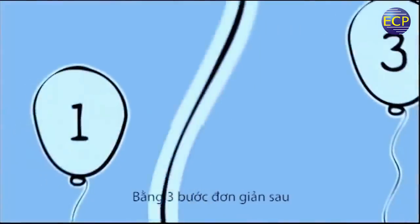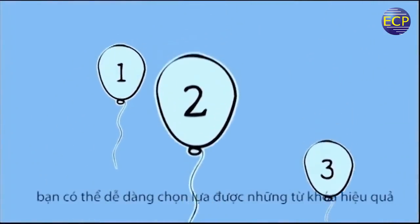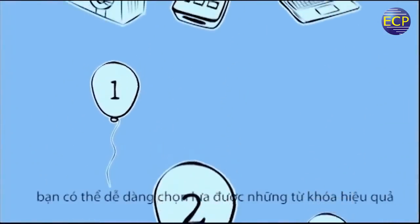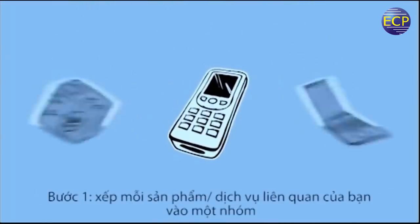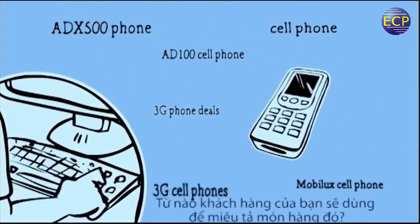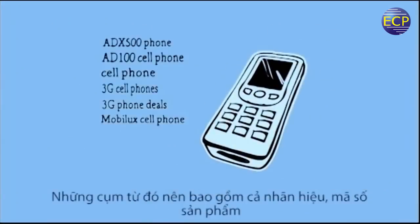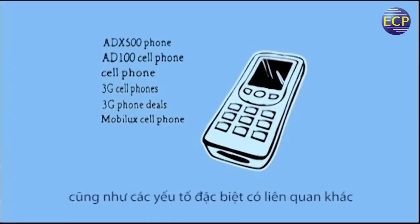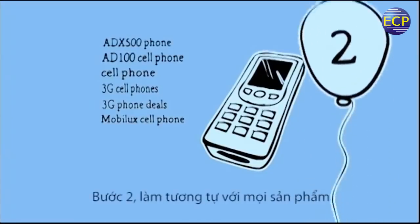The good news is it's easy to do this in your AdWords account by following our simple three-step plan. Firstly, take each of your products or services one at a time — which words or phrases would your customers use to describe it? Remember to include all brand and product names, as well as relevant variations and plurals.